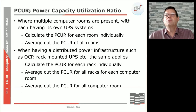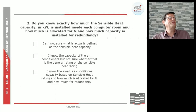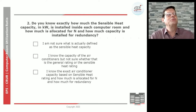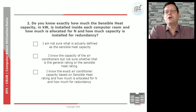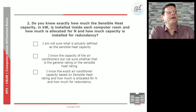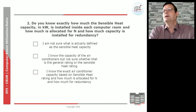Now let's look at number two — the mechanical capacity. The question is: do you know exactly how much sensible heat capacity in kilowatt is installed inside each computer room, and how much is allocated for N and how much for redundancy? Be aware, we are looking at sensible heat capacity. If somebody says I have six ton of air conditioning cooling, you need to know whether that allocation is for sensible heat. I know the capacity of the air conditioning, but I'm not sure whether that is the general rating or the sensible heat rating.